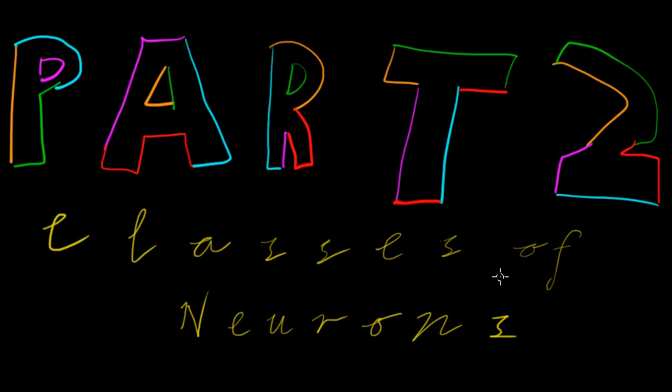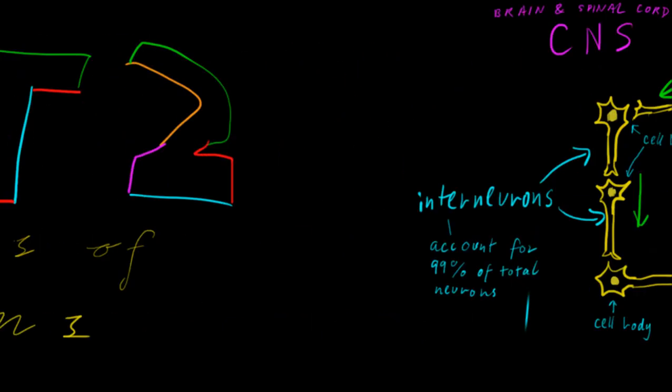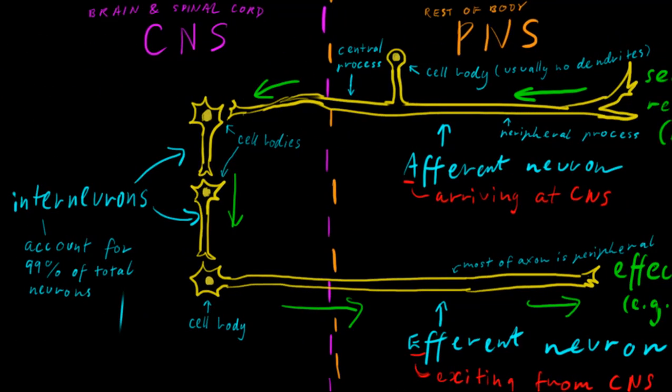Hi, my name's Tom and today I'm going to talk to you about classes of neurons. Okay, so this is going to be a brief overview of three different classes of neurons. They are broadly afferent neurons, efferent neurons, and interneurons.